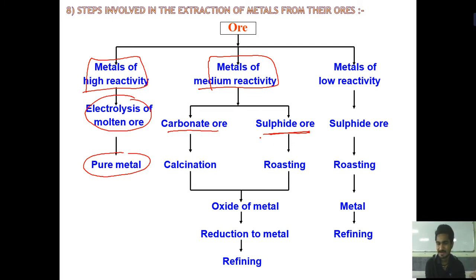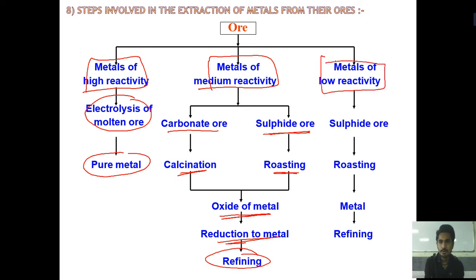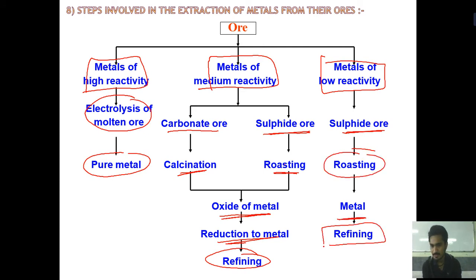For medium reactivity metals in carbonate or sulfide ore form: calcination or roasting is done to remove the carbonate or sulfide, which forms the metal oxide. Then reduction is done to remove the metal oxide, and finally refining gives us the clean metal. For low reactivity metals, a sulfide ore is present — roasting removes it, the metal form is obtained, and refining gives the pure metal. These are basically the steps involved in the extraction of metals from their ores.